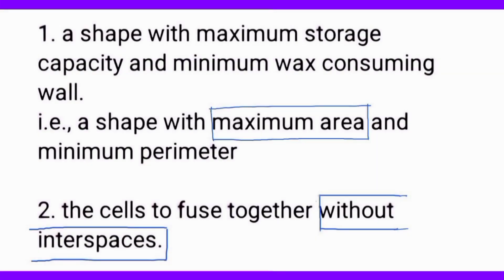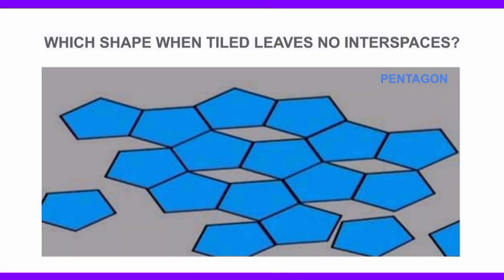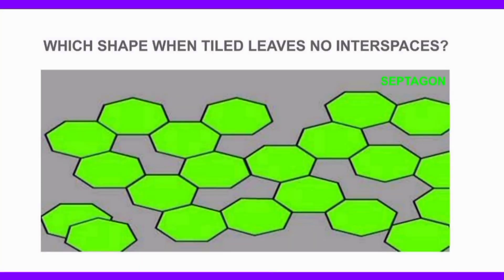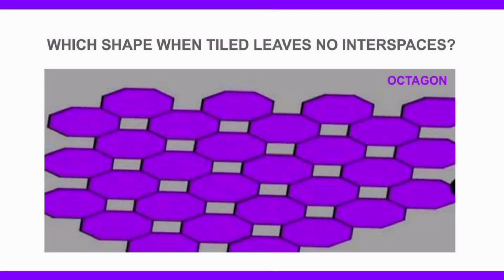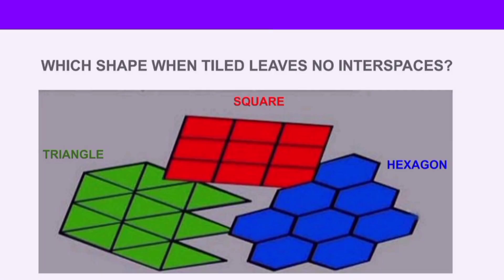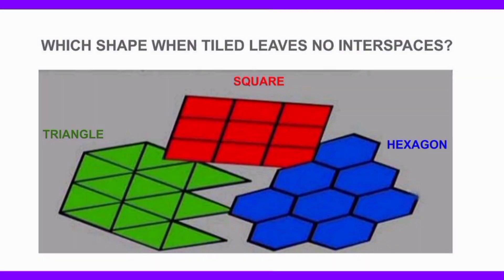Let us consider condition 2. Which shape when tiled leaves no interspaces? Is it a pentagon? Or is it a septagon? Or is it an octagon? No, they leave interspaces. But what about triangle, square, and hexagon? They don't leave interspaces.